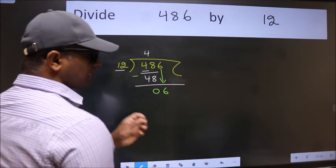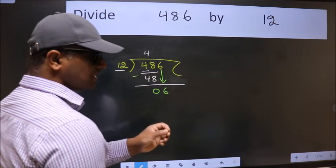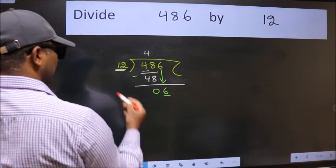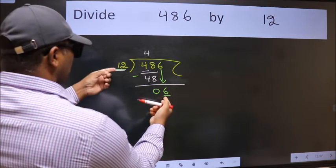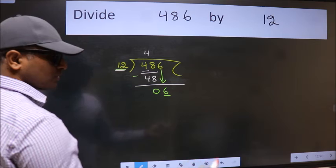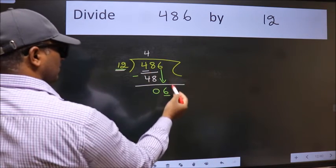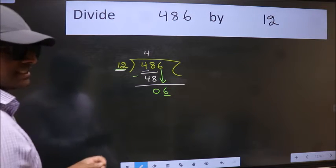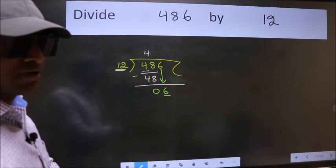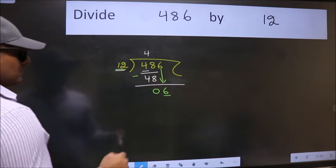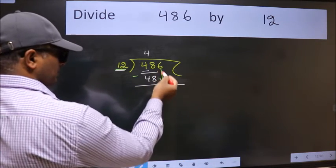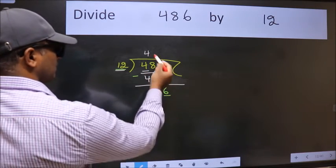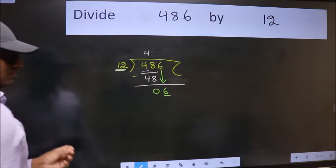After this step the mistake happens. And the mistake is this. Here we have 6 and here 12. 6 is smaller than 12. So what many do is they directly put dot, take zero, which is wrong. Why is it wrong? Because just now you brought this number down, and in the same step you want to put dot take zero, which is wrong.